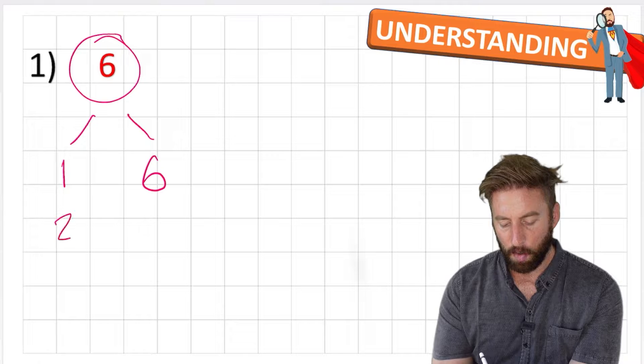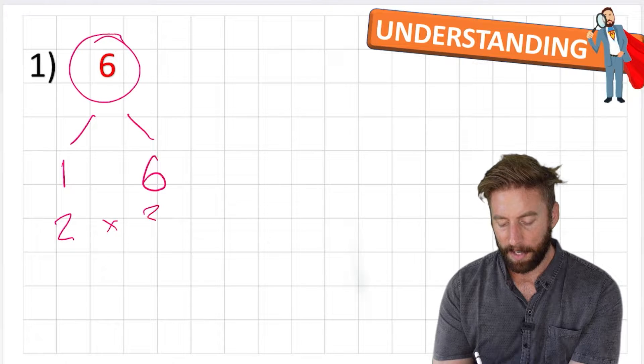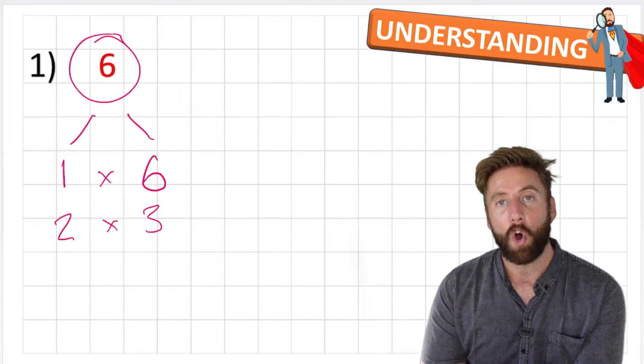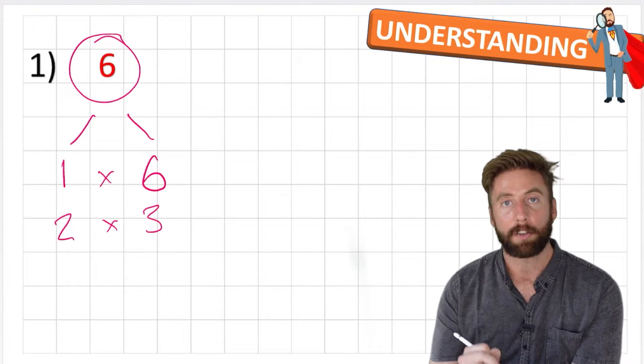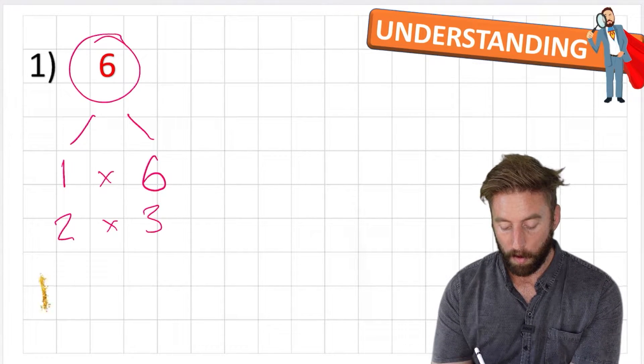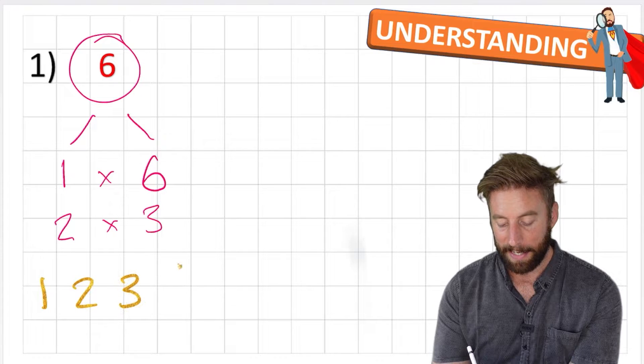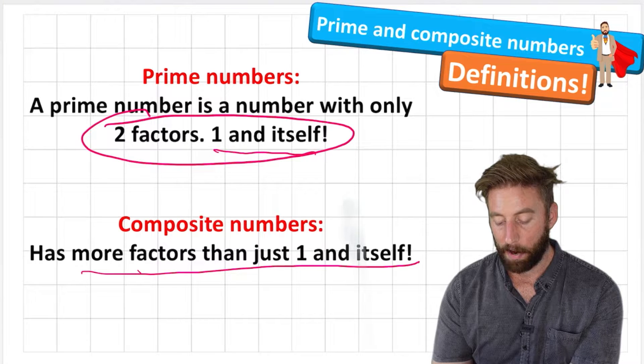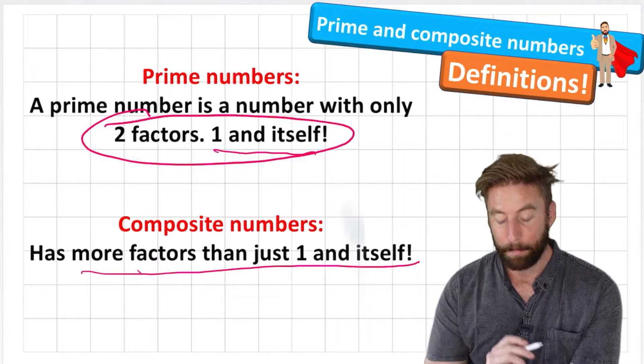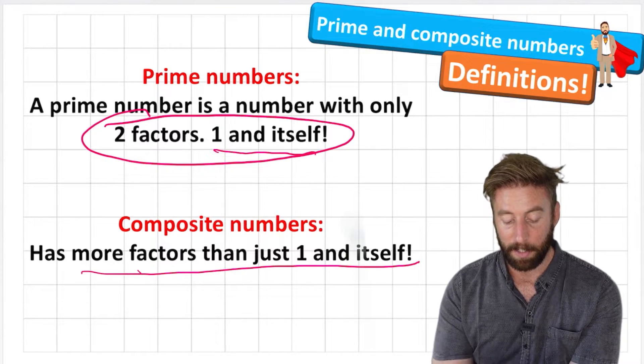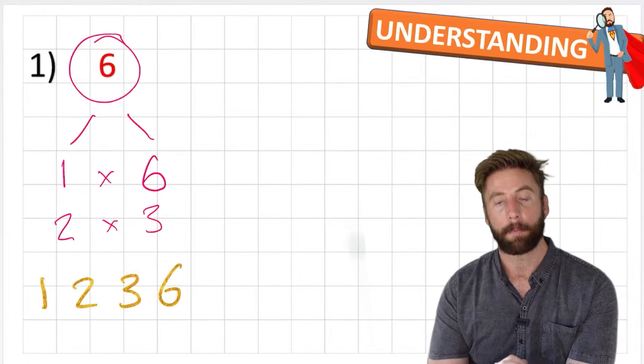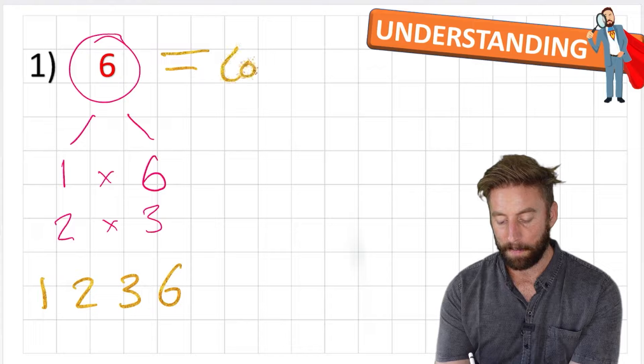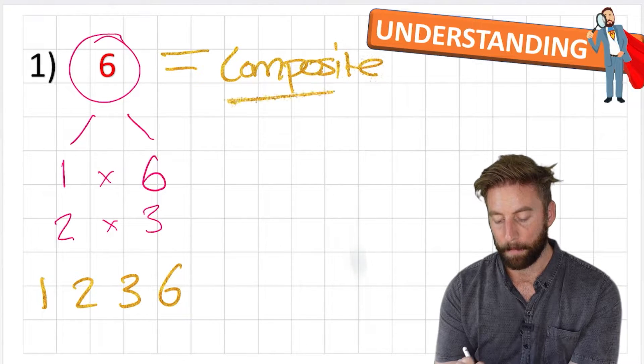So basically two numbers that multiply together to equal the number six. The first one we can always start with is one and six. And at this point, if this is the only set of factors that we can get, then six would be a prime number. But let's see if we have any more factors. Well, I know that two times three also equals six. So therefore, six is not a prime number. Our factors for the number six are one, two, three, and six. Now let's look back at our definition. Two factors, one and itself, means it's a prime number. And more than just those two factors means it's a composite. So the number six is a composite number.